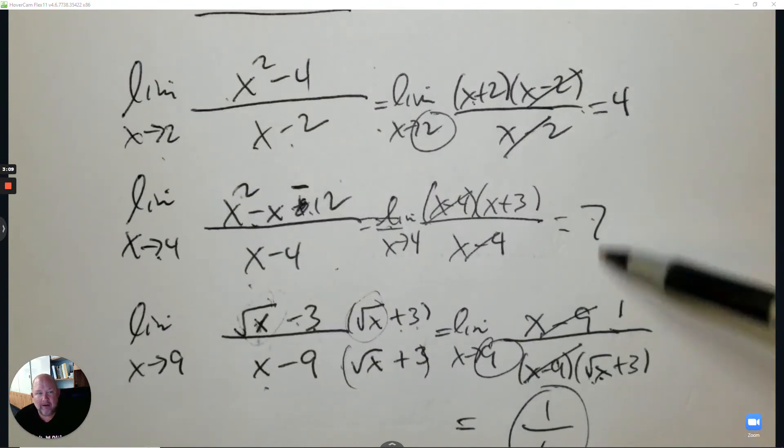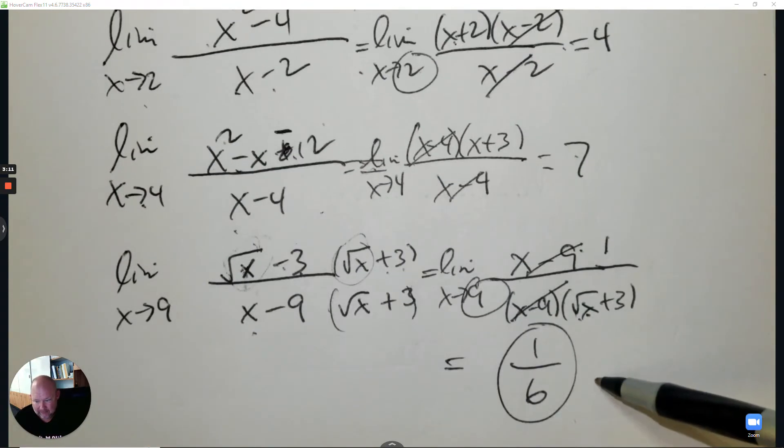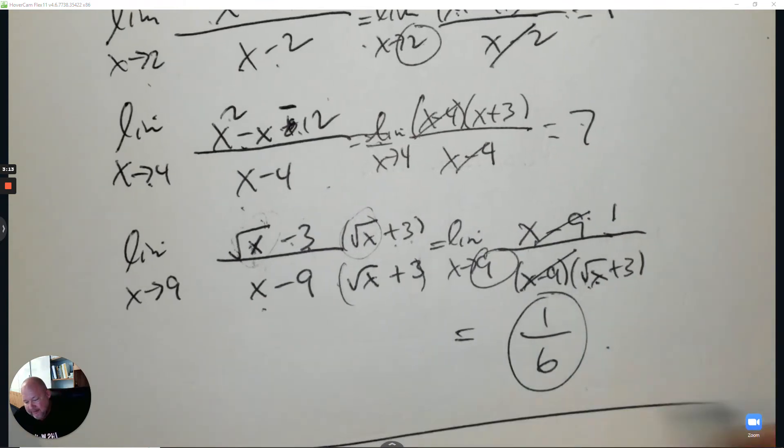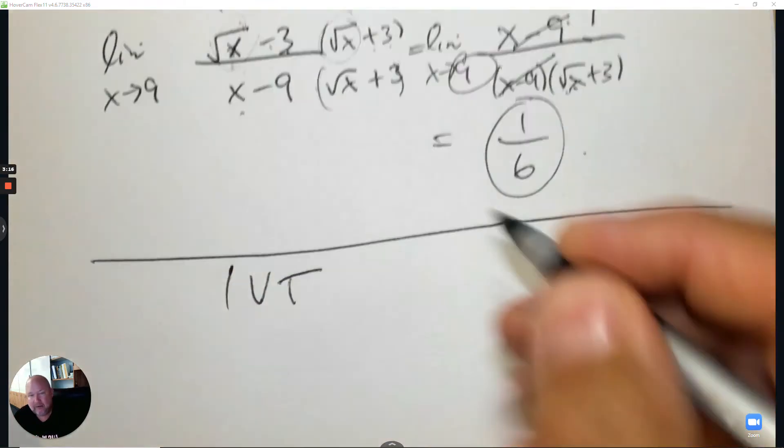These are different ways something could be indeterminate and how you would solve it. The last part of the lesson is the intermediate value theorem.